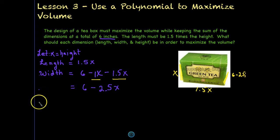And we know that in order to get volume, you need to multiply the length times the width times the height. So if we do that, we have x, which is our height, times 1.5x, which is our length, and our width we said was 6 minus 2.5x. So now we have a polynomial function that's not quite in standard form. And so we just need to simplify it and use our math skills to do that.